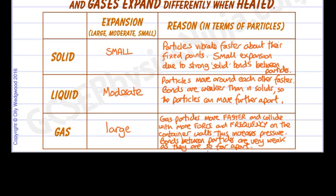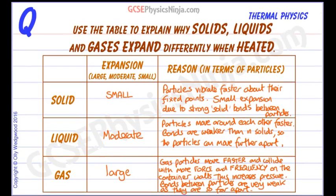That means that the gas particles don't have very strong bonds — in fact they have very weak bonds between them. And so those weak bonds can't stop them from moving further apart. So that's why solids, liquids and gases expand by different amounts: it's all to do with the particles. When you have to explain that, do so with reference to the particles, how they're moving, and their bond strength.